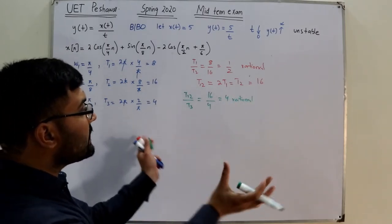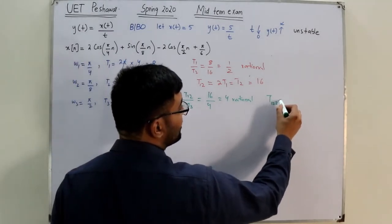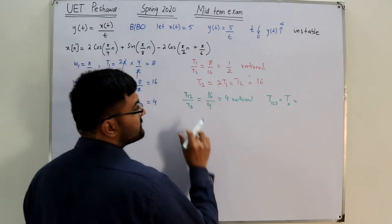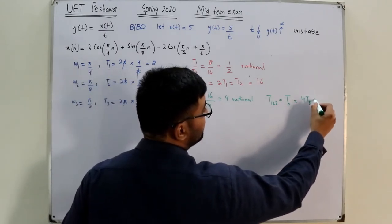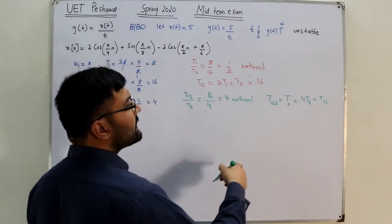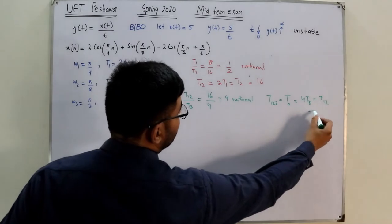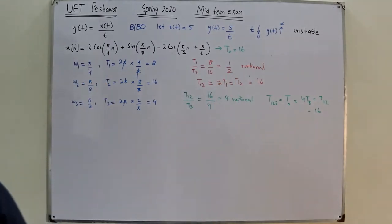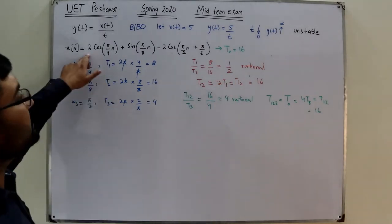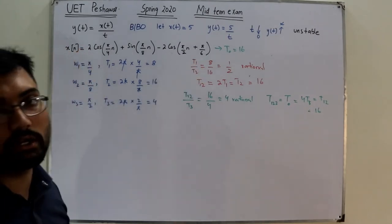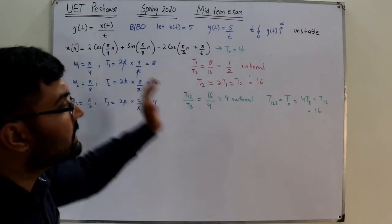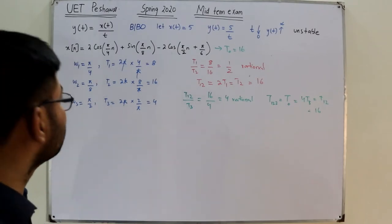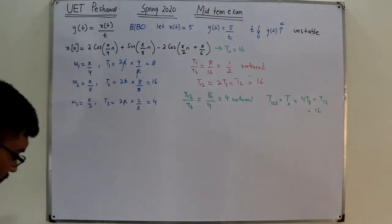We now find the overall fundamental period T0. Since 4·T3 = T12, the fundamental period T0 = 16. We have option 16 available, so the answer is 16. Amplitude shifting, phase shift, and amplitude reversal do not affect the fundamental period.